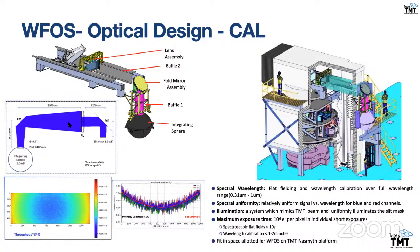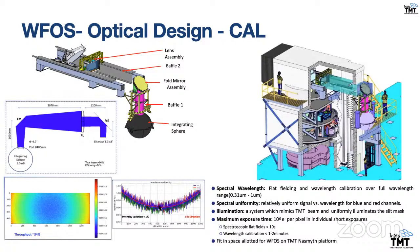The light from the integrating sphere is folded using a fold mirror and hits a projection lens. This projection lens system projects the light onto the slit mask after passing through the M4 system. At the slit mask, uniform illumination is achieved with a throughput of about 34 percent from the whole system — majority of the absorption happening in the projection lens. There is a variation of about 4 percent from end to end along the slit direction, but the RMS variation is less than 1 percent.